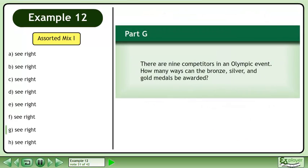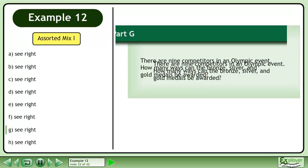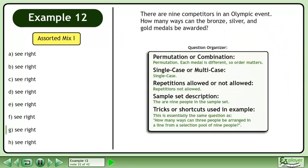Now we'll move on to Part G. There are nine competitors in an Olympic event. How many ways can the bronze, silver, and gold medals be awarded? Pause the video and organize the information about this question.